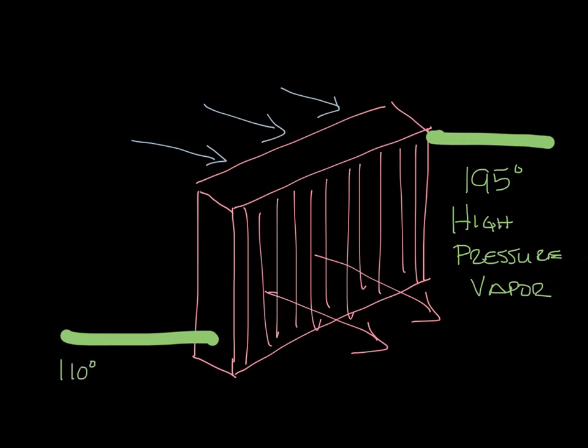The refrigerant leaves the condenser as a 110 degree liquid refrigerant. And the air that passes through the condenser warms up. So that's the condenser. And also, let's write high pressure over here.